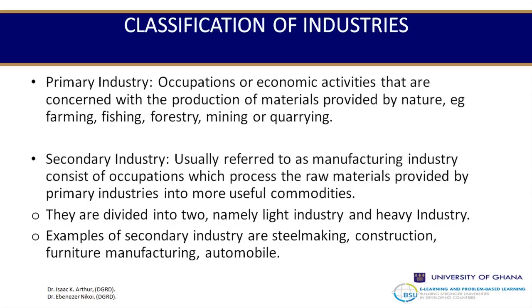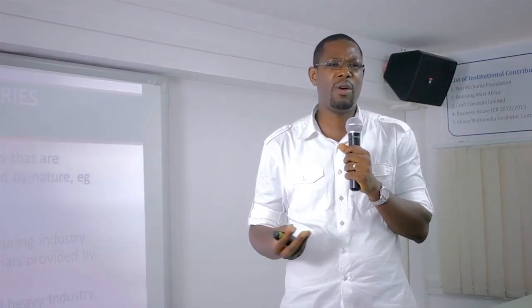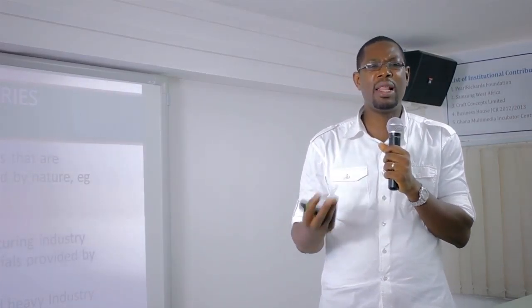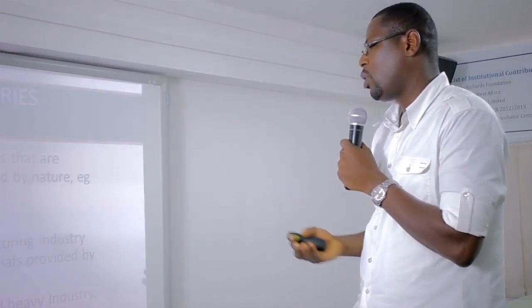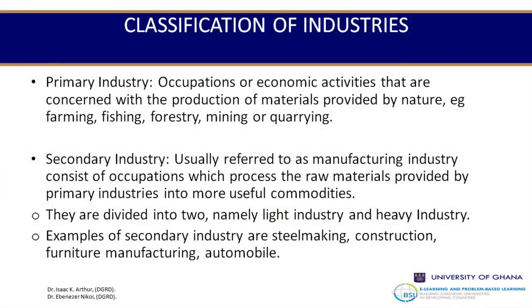Light industries produce things like pens or plastic bottles, while heavy industries produce ships, cars, and trains. Examples of manufacturing industries generally include steel making, construction, furniture making, and the automobile industry.